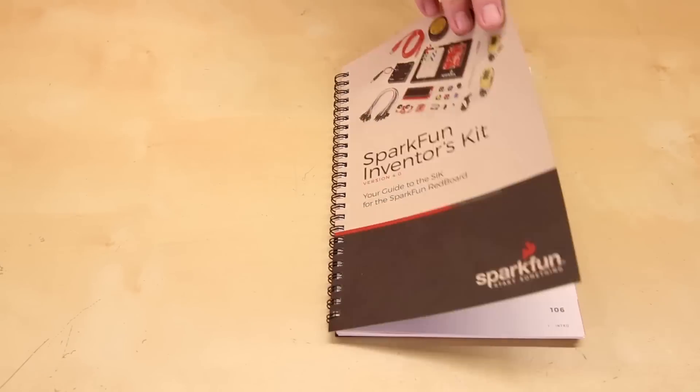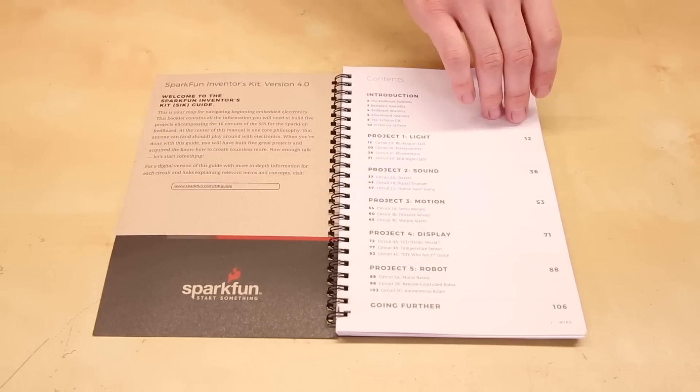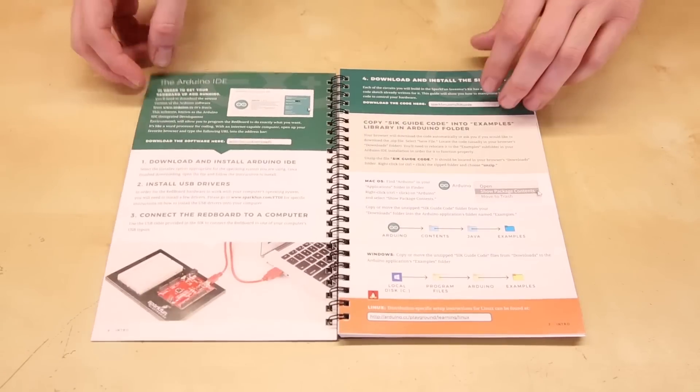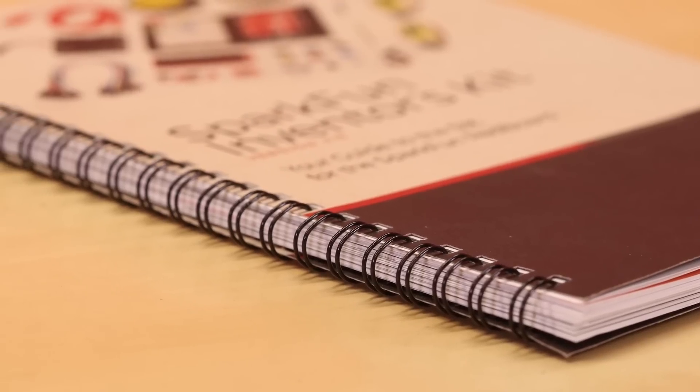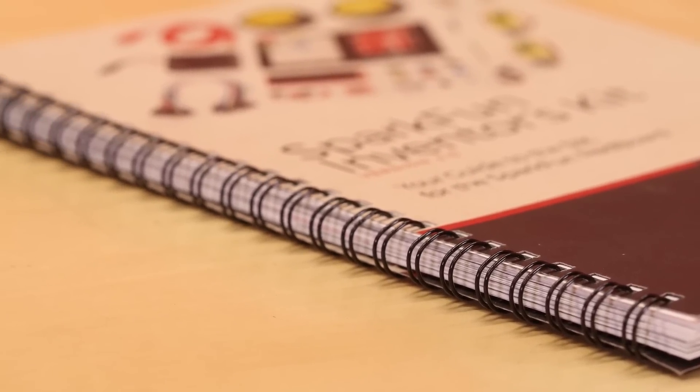The print guide that comes with the kit has also gotten an entirely new look and flow. The circuits are now broken up into five projects, each focusing on specific technologies and concepts. We've also switched to a spiral binding for more ease of use while building your circuits.